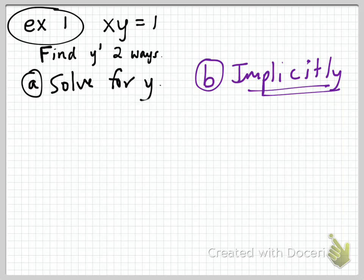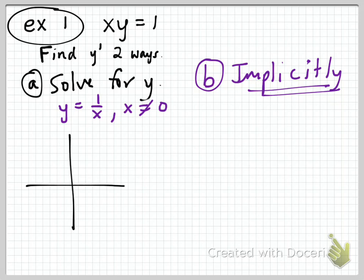For part A, we're going to solve it the same way we would solve any of the others. Solving for y, we get y equals 1 over x by dividing both sides by x — noting that y equals 1 over x when x is not equal to 0. We should be familiar with the graph y equals 1 over x.